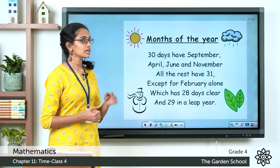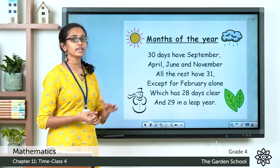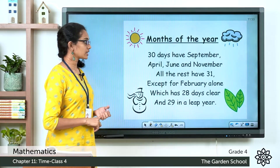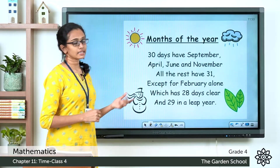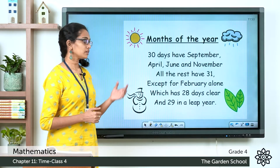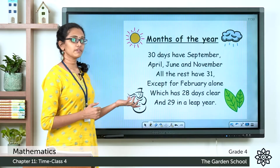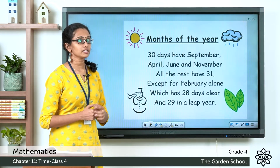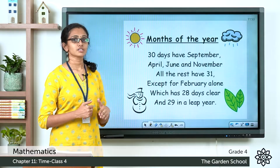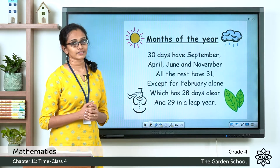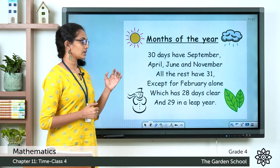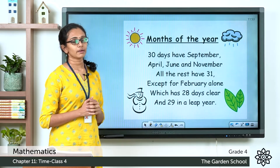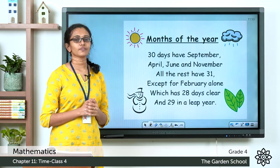The other months — January, February, March, May, July, August, October and December — have 31 days. And February has only 28 days, but once every 4 years it will have one more day, or 29 days. It will be easier for you to solve these kinds of questions if you know the number of days in each month of a year.